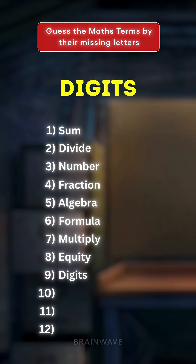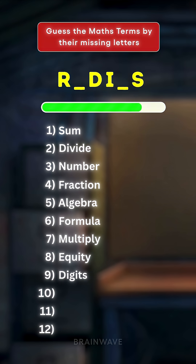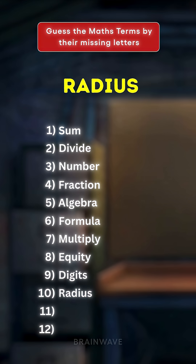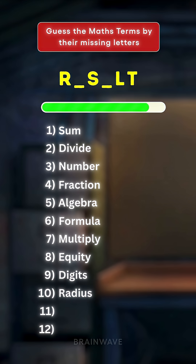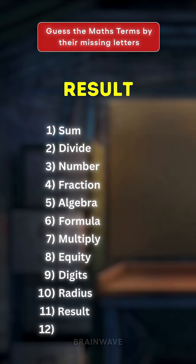Ninth one: Digits. Tenth one: Radius. Eleventh one: Result.